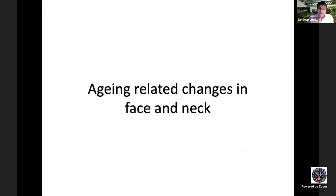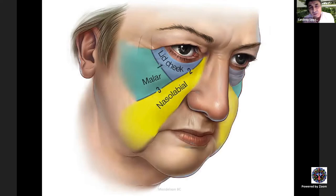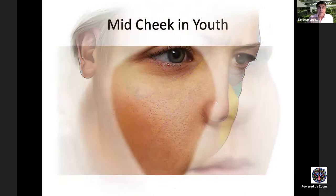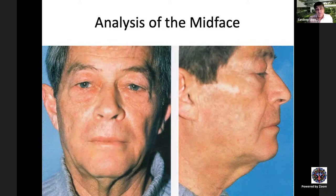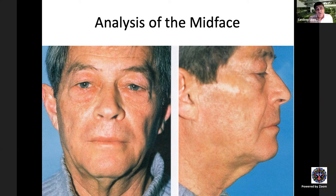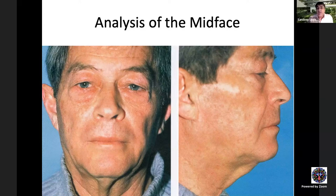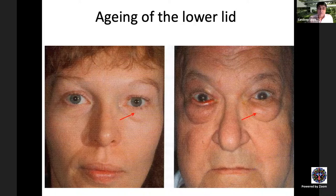In the youthful face, the midcheek presents as a single convexity from the lower lid to the lower midface. With aging, pseudo-herniation of orbital fat creates a convexity just below the eye, while midface tissues atrophy or descend, creating a double convexity and a visible junction between lid and cheek. The underlying bony tissue becomes visible through the skin. This deformity can present with fat prominence without skin laxity, or fat prominence with laxity.